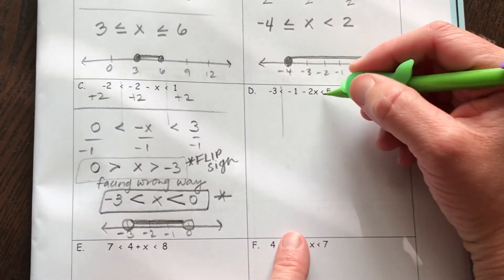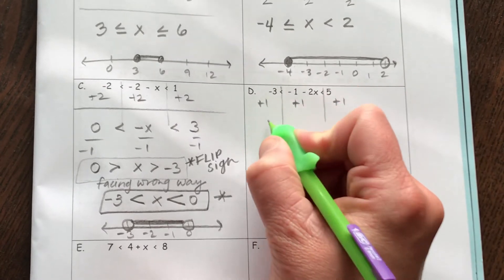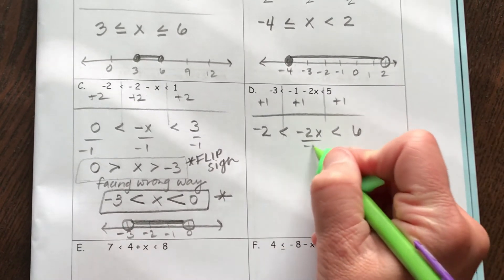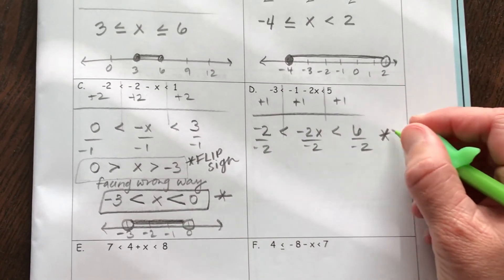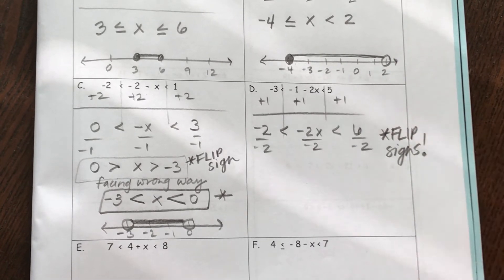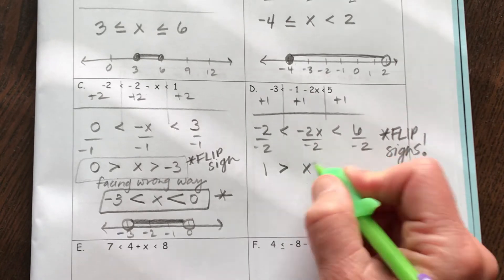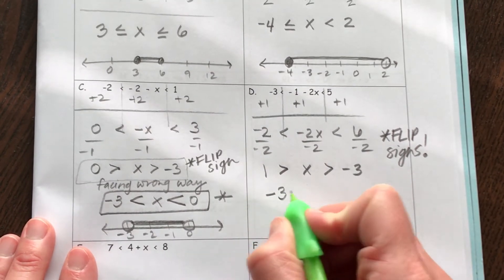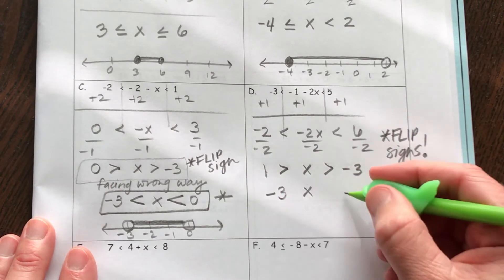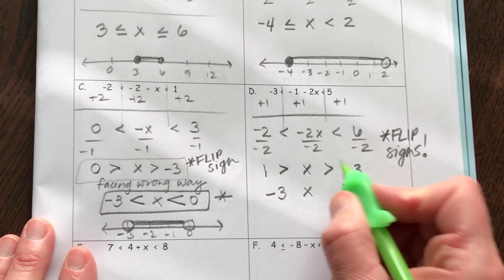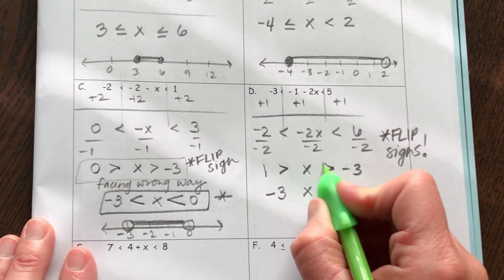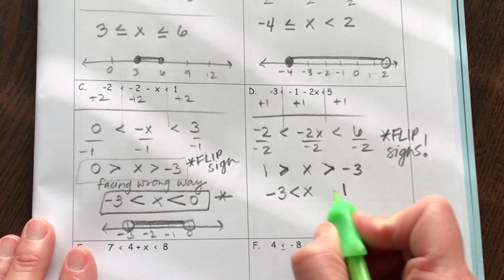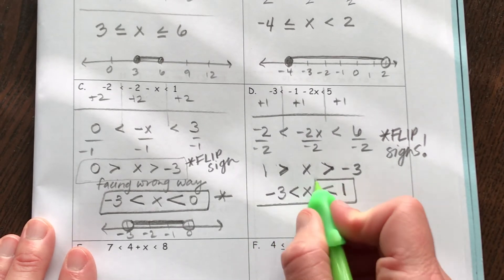Now for example D, I'm going to add 1 to each side. And now I'm gonna get negative 2 is less than negative 2X, is less than 6. And now I'm gonna divide again by a negative, so I can't forget to flip both signs. So I have positive 1, flip my sign, X is in the middle, flip my sign, and then negative 3. Notice how again this is out of order, so the correct order would be negative 3 on the left and 1 on the right. The inequality symbols remain the same — opening up towards X — just reordered correctly.